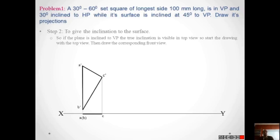Now the surface is inclined to VP. In which view will we see the inclination? As discussed in the first discussion, if any plane is inclined to VP, in the top view you will see the inclination. We have to visualize that. The inclination is 45 degrees, so this is the top view — it is a 45-degree line and the length of this line is equal to line AC.